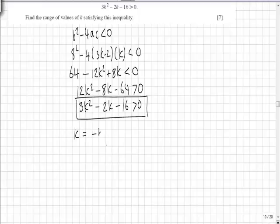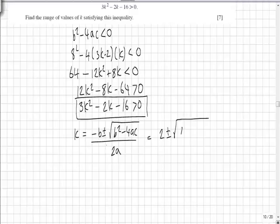So k is equal to minus b plus or minus the square root of b squared minus 4ac all over 2a. Substituting in we get minus minus 2 which is 2 plus or minus the square root of minus 2 squared which is 4, minus 4ac so 4 times 3 times minus 16, all over 2 times 3 which is 6.